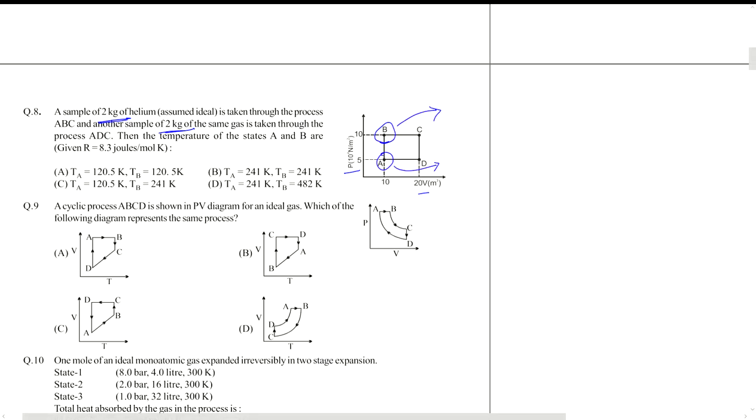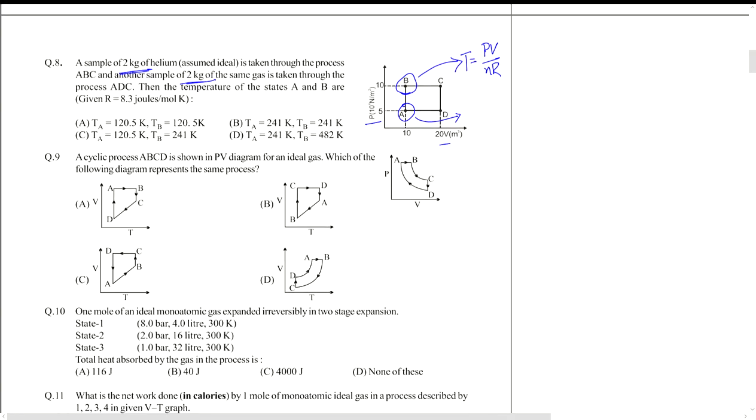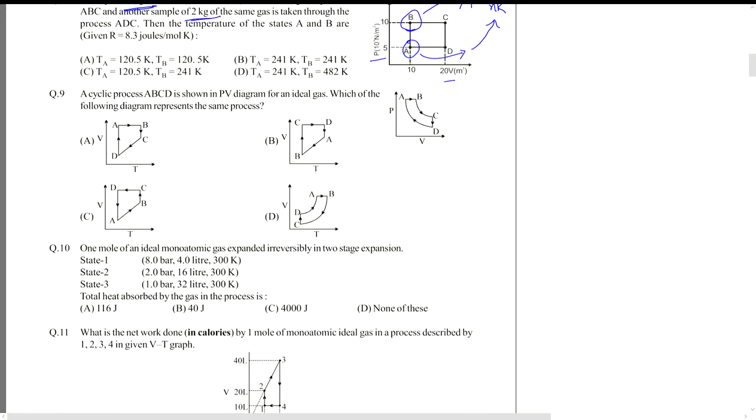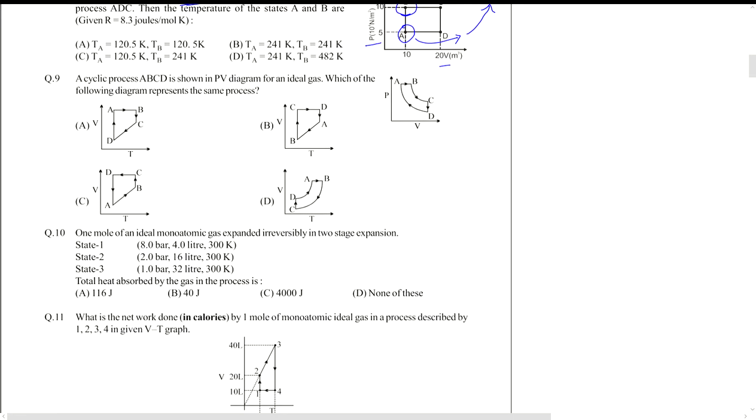In fact, since the states at A and B have defined values of pressure and volume, we can just write temperature as pV by nR. The pressure and volume are given. You have two kg of helium, so number of moles is known as well. The next question that was asked is question number 10.